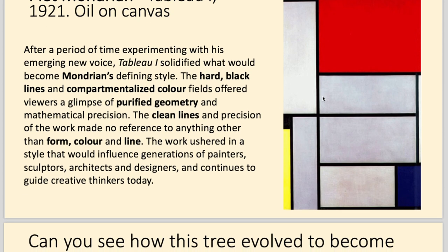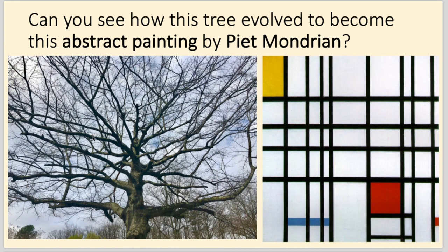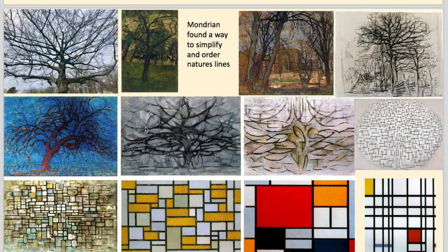As an example of how Mondrian worked, you can see the lines in this tree — these are organic shapes, but you can start to see the black outlines and squares beginning to form. Looking at the next slide, you can see his journey: he started painting trees and slowly, as he painted them in silhouette, he could see these geometric lines start to form. Bit by bit, he evolved his work into really simplified vertical and horizontal lines, simplifying the colours too, until eventually he ended up with pure abstract pieces.